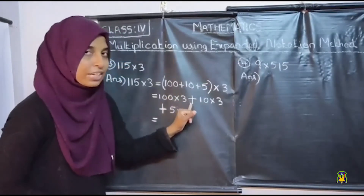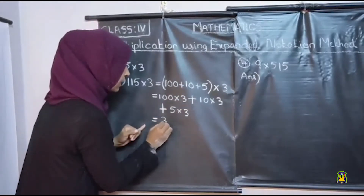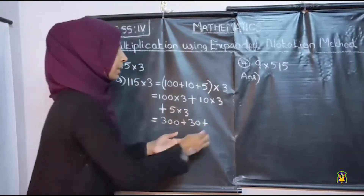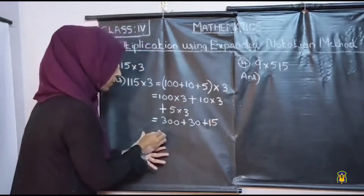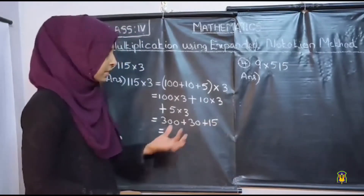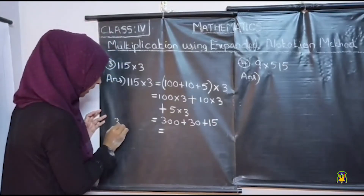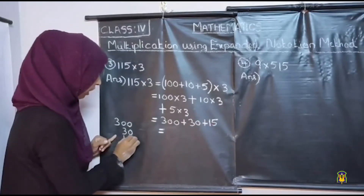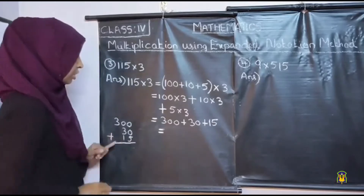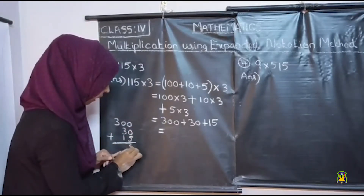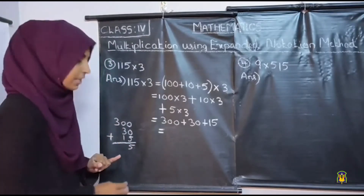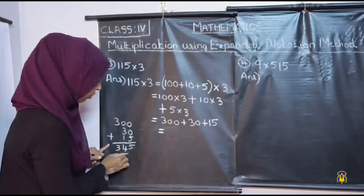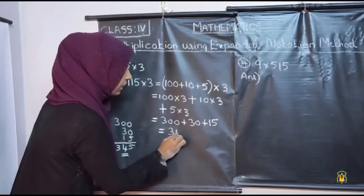What is 100 into 3? It is 300. 300 plus 10 into 3 is 30. 30 plus 5 into 3 is 15. Then we want to add these three numbers: 300, 30, and 15. 0 plus 0 plus 5 is 5. Then 0 plus 3 plus 1 is 4. Then 3 — there is no number here — so we can write 3. So we get the product: it is 345.